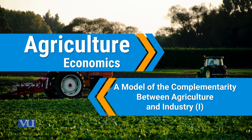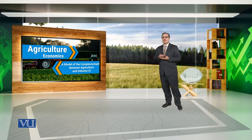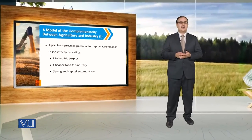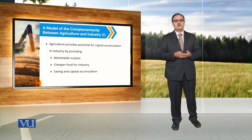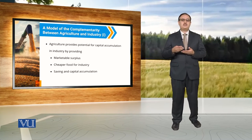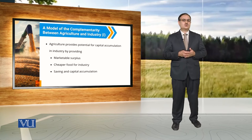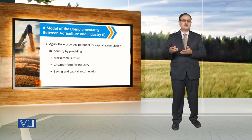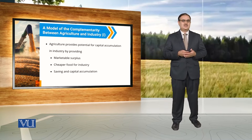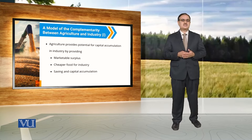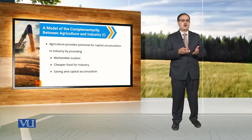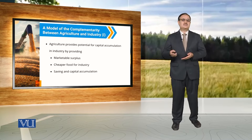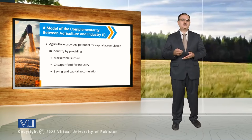A model of complementarity between agriculture and industry. When we talk about capital accumulation in the industrial sector, that capital accumulation comes from the agricultural sector. Agriculture basically provides the potential for capital accumulation in the industry by providing a marketable surplus — production over the subsistence level. It also provides cheaper food for industry, and savings in the agricultural sector result in capital accumulation in the industrial sector.